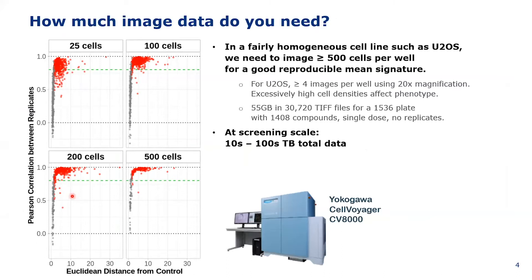On the left-hand plot, the y-axis shows the correlation between replicate signatures for a treatment, which is a measure for reproducibility, and the x-axis shows the Euclidean distance from the control, which is a measure for the phenotypic strength of your treatment. At 25 cells, signatures are far too noisy. At 200 cells, this starts to be decent. At 500 cells, you get a good reproducible signature that doesn't improve much beyond that. However, since many compounds are somewhat toxic, you want to image more than 500 cells. For U2OS, we typically image four fields of view at 20x magnification, which adds up for a single 1536-well plate to about 55 gigabytes — and at typical screen scale, this comes to tens to hundreds of terabytes of total data.